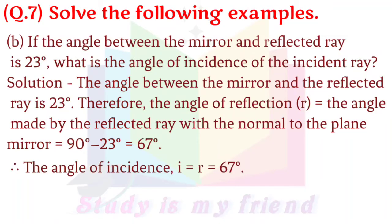B. If the angle between the mirror and the reflected ray is 23 degrees, what is the angle of incidence? Solution: The angle of reflection (R) equals 90 degrees minus 23 degrees, which equals 67 degrees. Therefore, the angle of incidence (i) equals R, which equals 67 degrees.